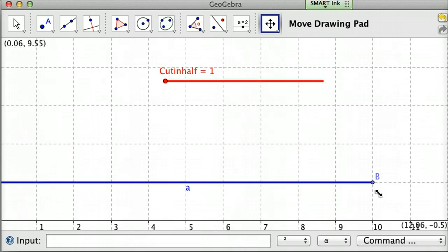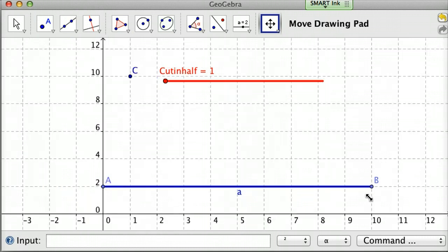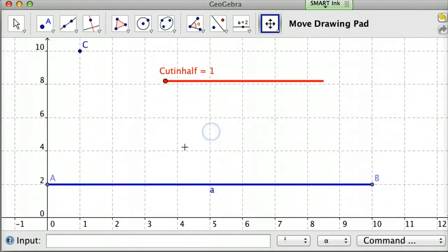So an asymptote to me is when a function reaches towards a point but never quite reaches it. The best way I think to think of an asymptote is we've got this line segment here, A and B, and it's 10 units long.